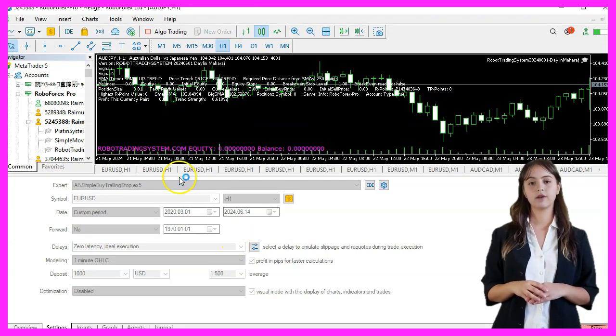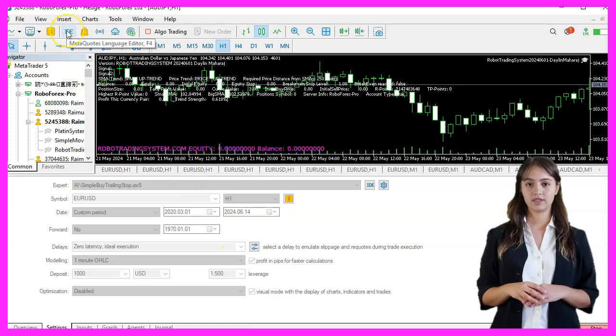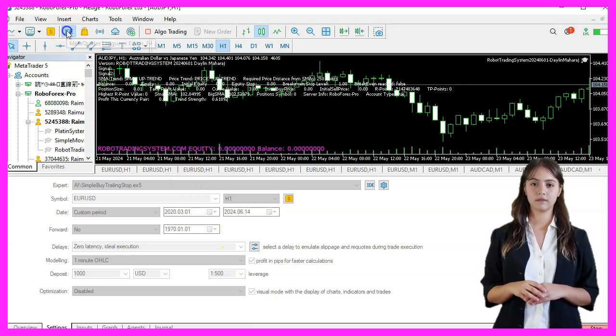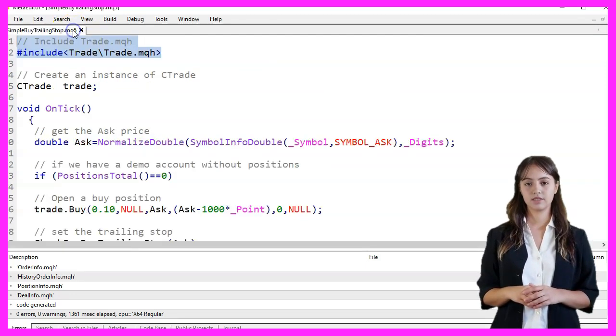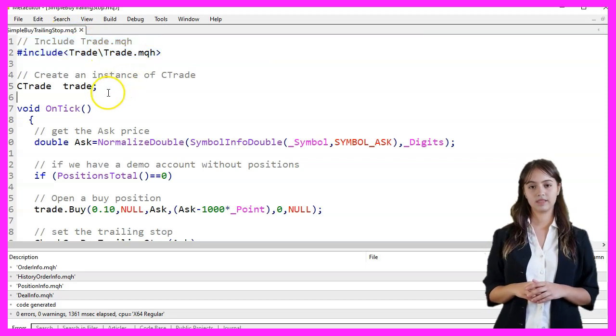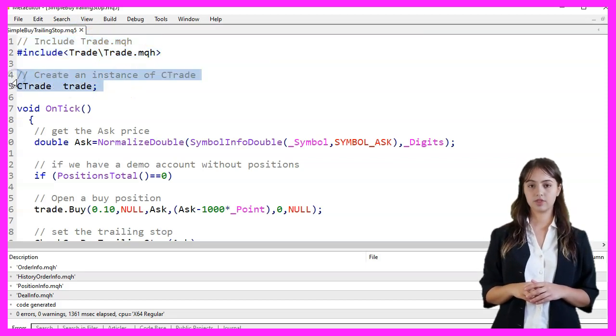First we start MetaEditor by clicking the little icon or pressing F4. We begin by including the trade.mqh file, which provides us with trading functions. Next, we create an instance of the CTrade class named Trade, which will be used to execute trading operations.